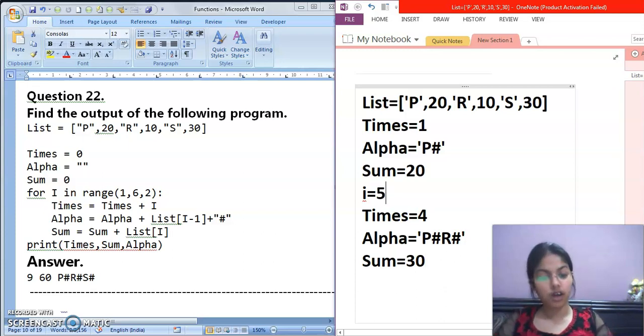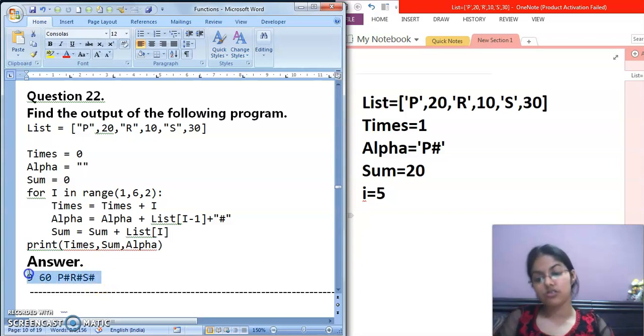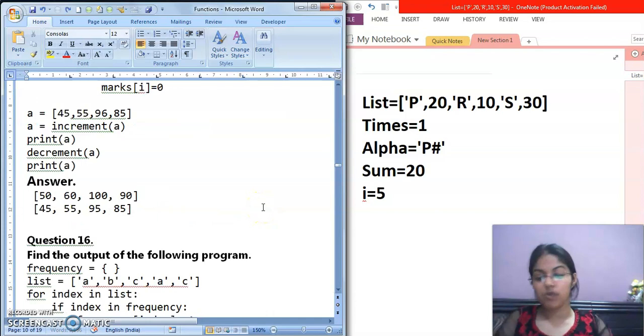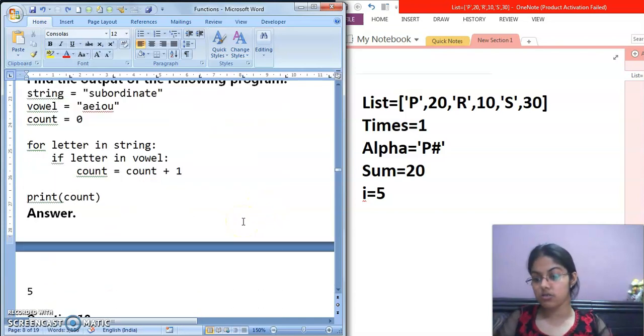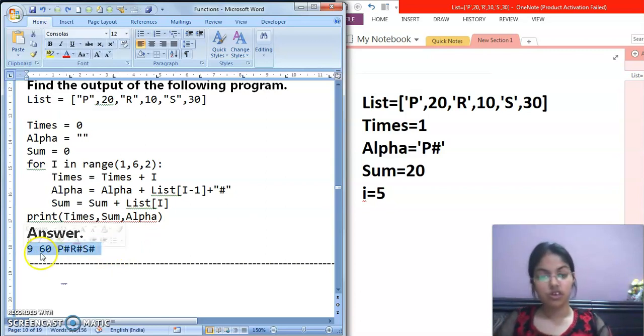Same you can execute for I equals to 5 also. This I am letting it upon you. You can solve this and tell your answer also. This print statement is outside the for loop. Whatever value comes at the end, you can execute that. Just a second. You can tell your answer here also. If you will find any doubt or any problem, you can write it in comment section. I will reply. Thank you.